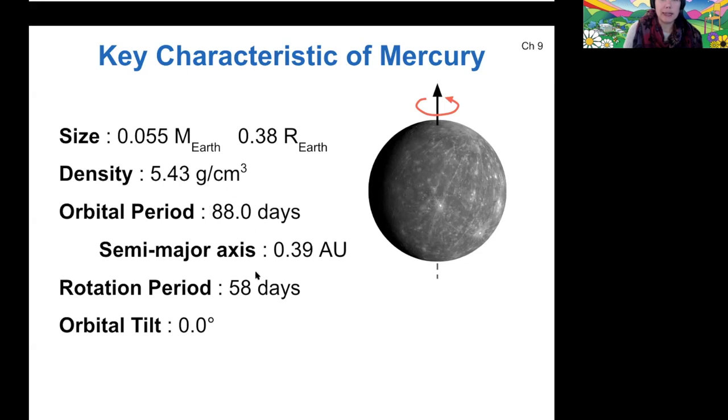The orbital period is 88 days, the rotation period is 58 days, so it makes three rotations for every two orbits that it does. It doesn't have hardly any axial tilt, so its orbital tilt is exactly zero degrees, so it orbits in such a way that it wouldn't experience seasons in the same way that Earth does.